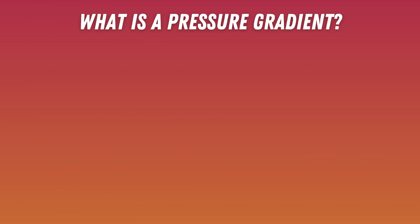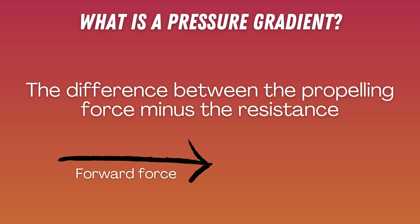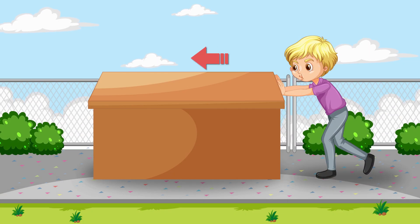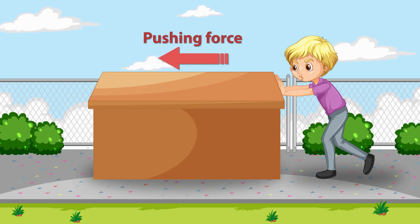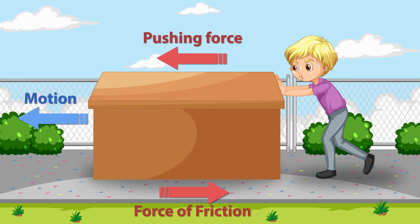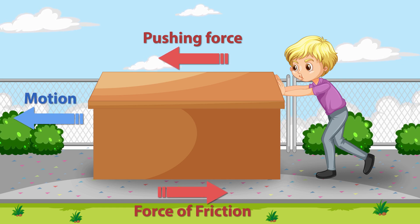To understand coronary perfusion pressures, you first have to understand pressure gradients. A pressure gradient is the difference between the propelling force minus the resistance. This should make intuitive sense — you can't move something forward if the opposing force is stronger. The gradient has to be net positive to move something forward. The same physics principles apply to blood flow in the heart.